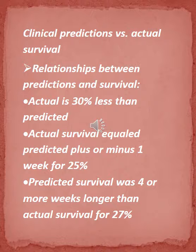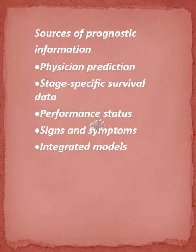Clinical predictions versus actual survival: Actual survival is 30% less than predicted. Actual survival equaled predicted plus or minus one week for 25% of patients. Predicted survival is four or more weeks longer than actual survival for 27% of patients.